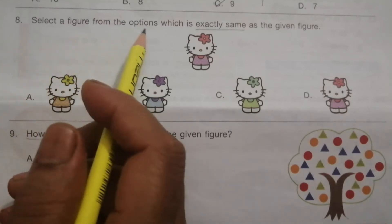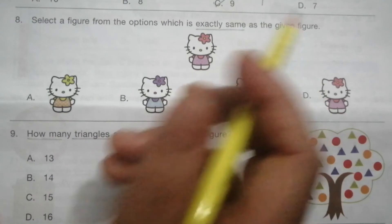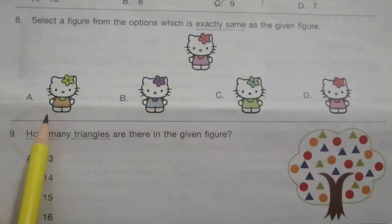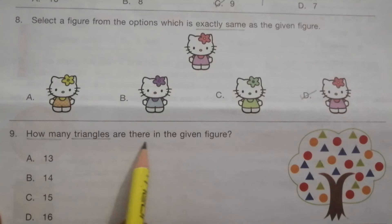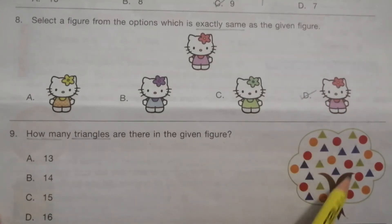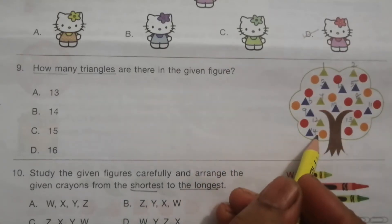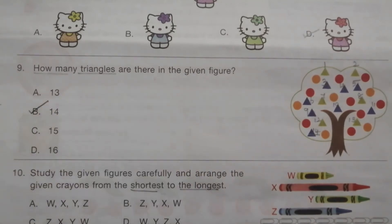Problem 8: Select a figure from the options which is exactly same as the given figure. This is the given figure, these are the options. The answer is D. Problem 9: How many triangles are there in the given figure? The number of triangles are 14. The answer is B, 14.